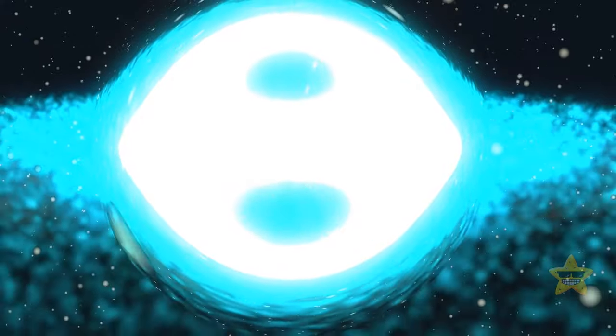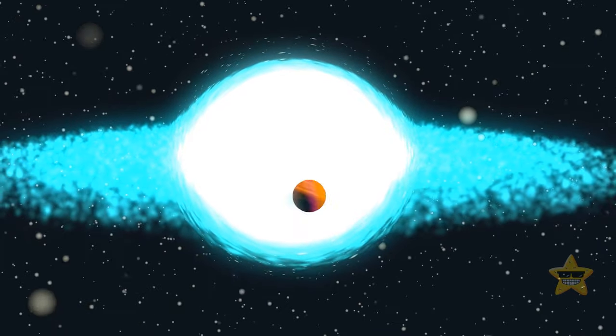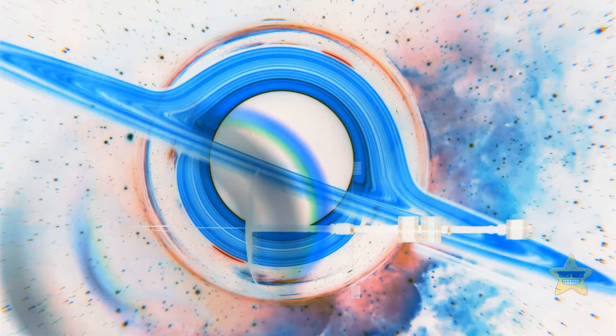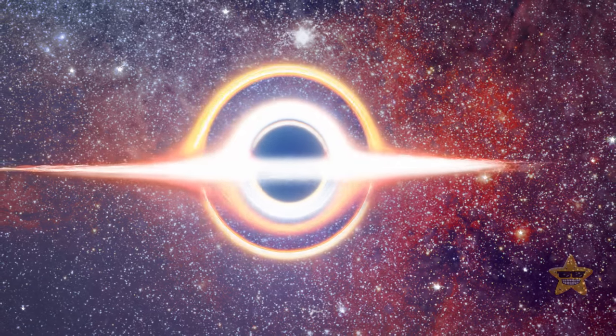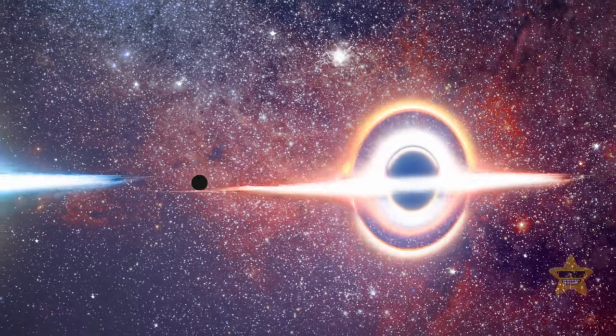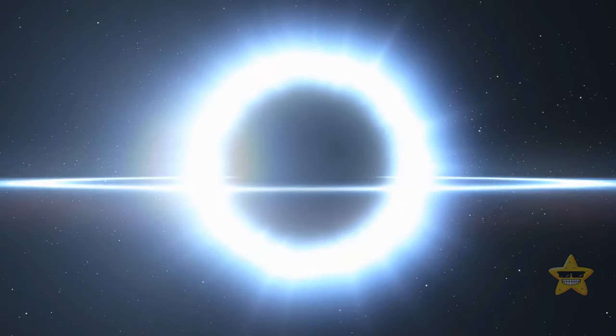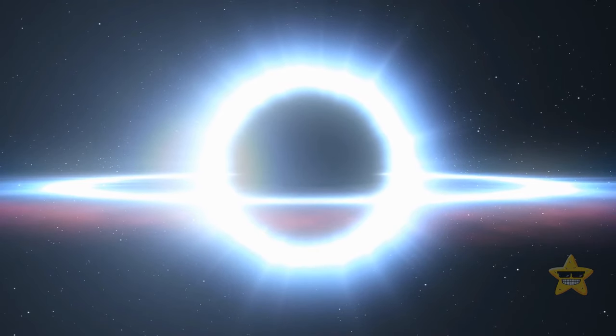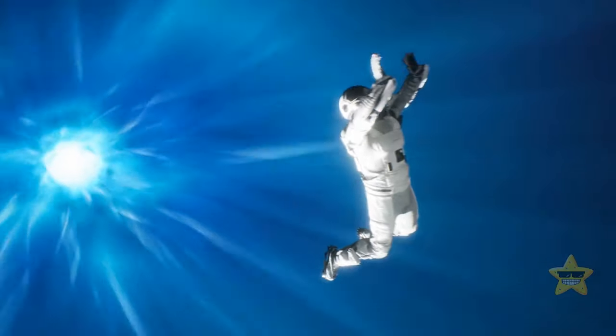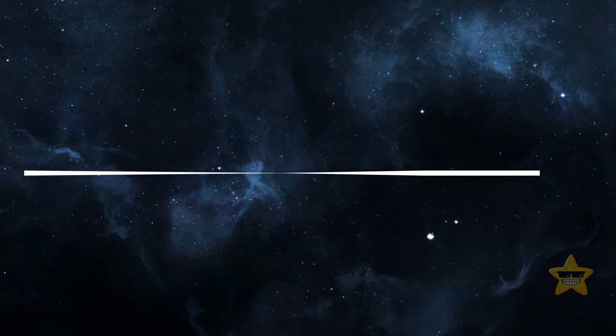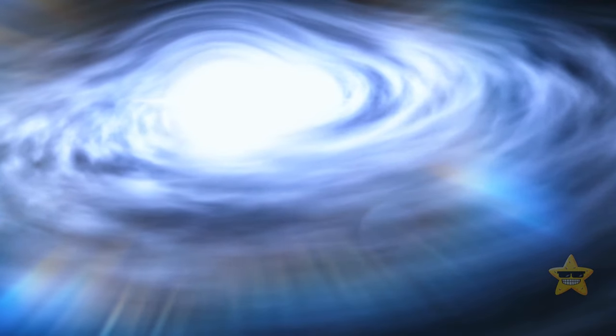But if black holes lead to other galaxies or other universes, there must be something opposite to them on the other side. That's where the concept of white holes comes into play. So far, white holes are only a theory. You can imagine them as black holes in reverse. Or as a ball that falls to the ground and then bounces up again. In other words, everything that falls in, bounces, and comes out through the white hole.